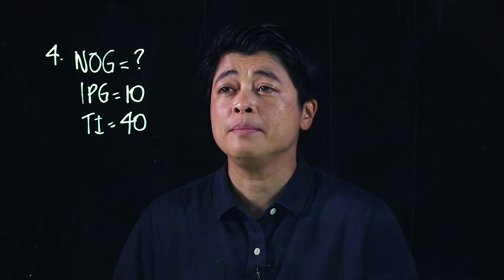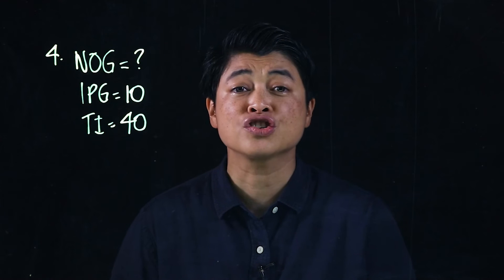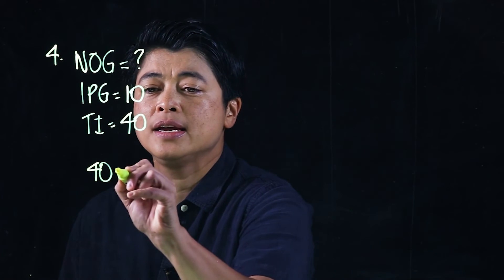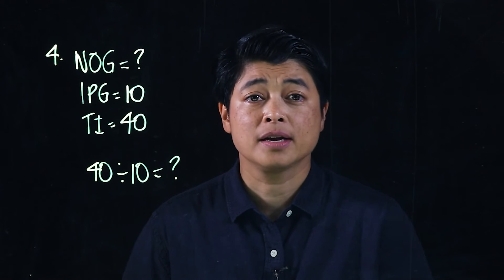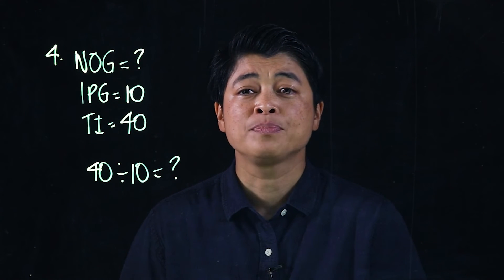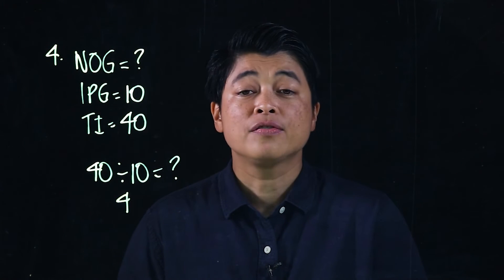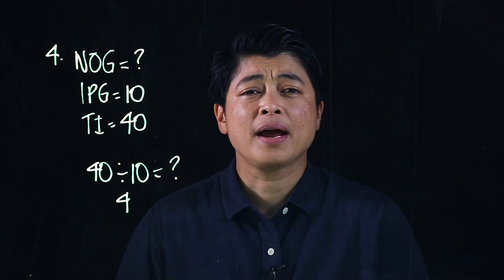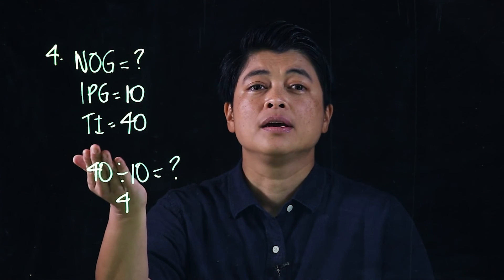The problem is missing the number of groups, so clearly this will be a division problem. 40 divided by 10 equals question mark. We count by tens until we reach 40, so that would be four. There are four groups of 10 in her class.